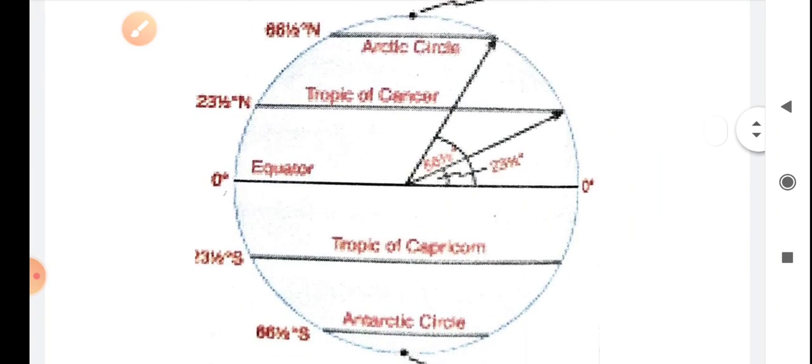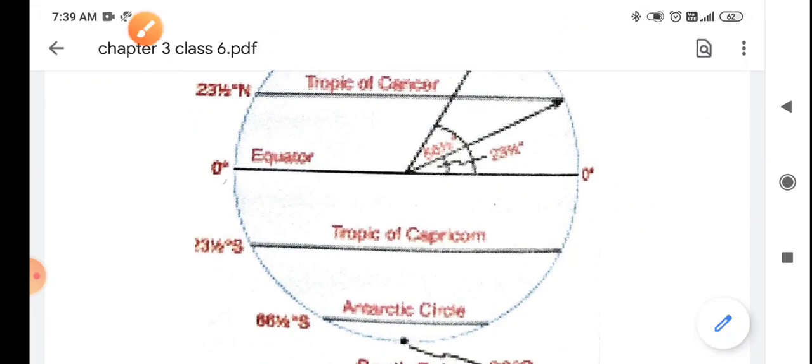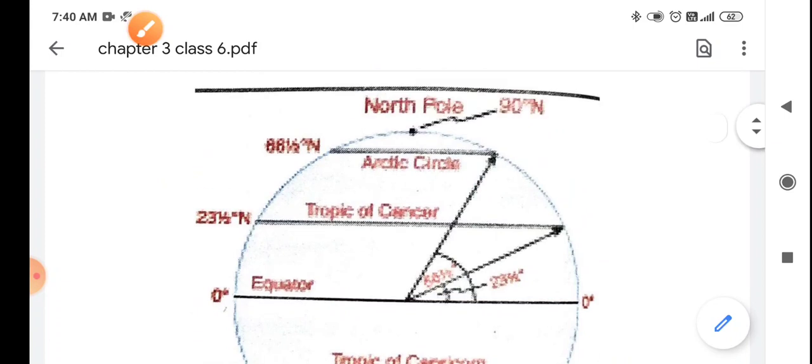And these are the main lines, main lines of latitudes. 0 degree equator. Then tropic of cancer at 23.5 degree north. Then it is arctic circle at 66.5 degree north. The last is north pole at 90 degree north.